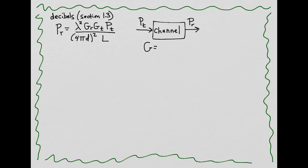We can define the gain of an amplifier — in this case the gain of our channel — as being the ratio of the output power to the input power. But usually the output power is weaker than the input power, the channel being a lossy medium. And so instead we might actually want to describe the loss, the loss being the transmit power over the receive power, or simply the reciprocal of the gain.